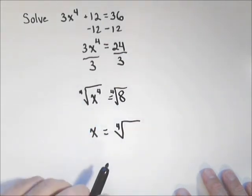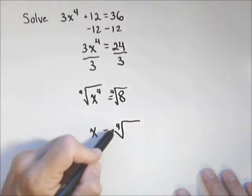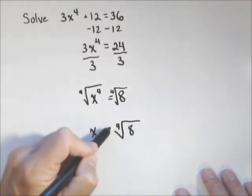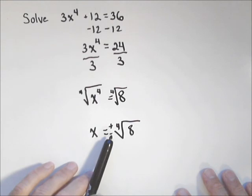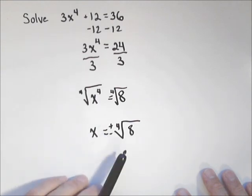Now because this was an even number, we do have to account for both the positive and negative solutions. And that will actually account for all our solutions. Positive fourth root of eight, negative fourth root of eight.